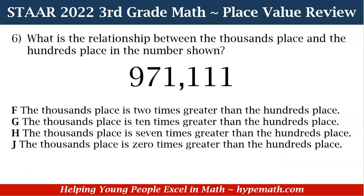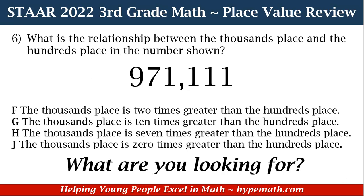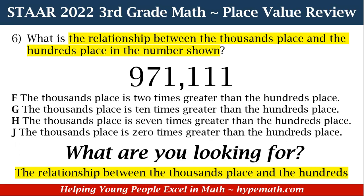Now, question number six: what is the relationship between the thousands place and the hundreds place in the number 971,111? Is it F) the thousands place is two times greater than the hundreds place, G) the thousands place is 10 times greater than the hundreds place, or H) the thousands place is seven times greater than the hundreds place? What are we looking for? We are looking for the relationship between the thousands place and the hundreds place.